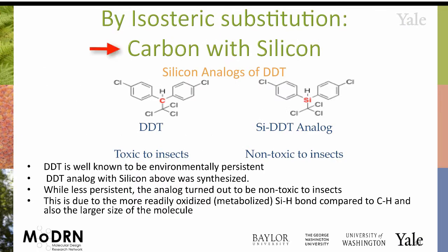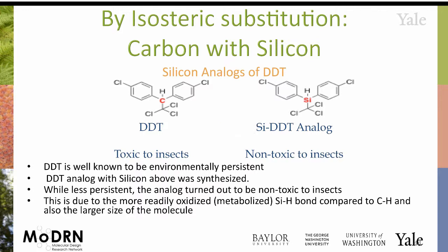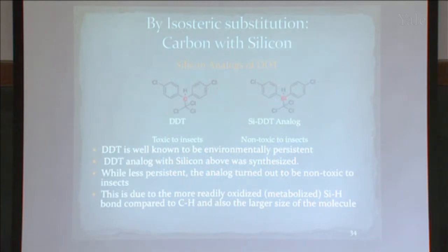Isosterism is replacing one atom with a different atom. With DDT, it's known to be very persistent because of all the chlorines attached to the carbon. But if you take out the carbon and change it to silicon — which, as those who've memorized the periodic table know, sits directly below carbon — it is dramatically less persistent, less able to bioaccumulate, and turns out to be non-toxic to insects, breaking part of that cascading effect. This also makes the molecules significantly larger, and the bond is much more easily cleavable.